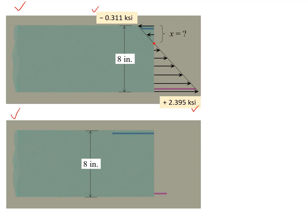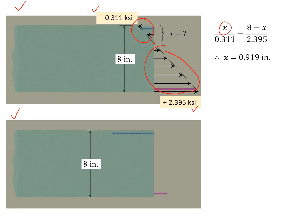The question is: what is the distance x at this intersection point? You can apply your knowledge of linear functions to solve for x. An easier way is to recognize two similar triangles. The ratio between x and the stress arrow of length 0.311 equals the ratio between (8 minus x) and the stress arrow of length 2.395. Based on this equation you can solve for x. This is just one method — you can certainly apply others.